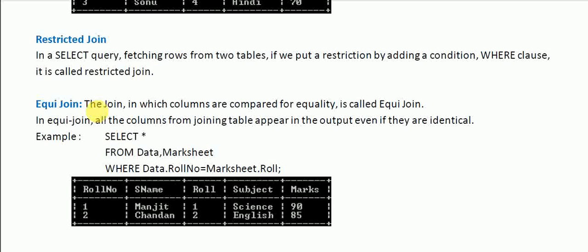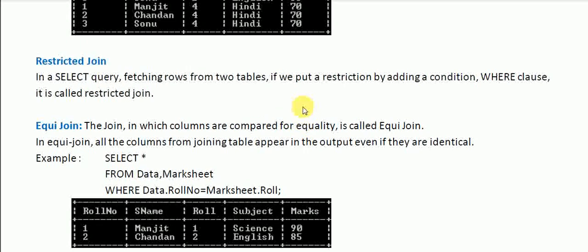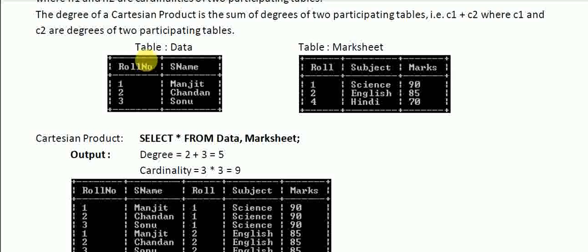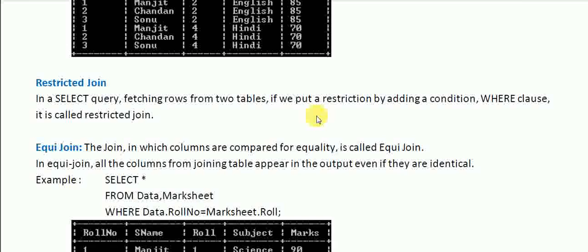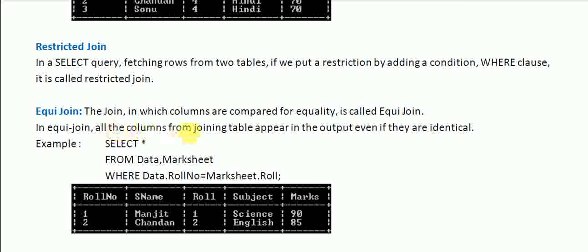The next type is the equi join. In an equi join, the columns are compared for equality. For example, we compare the 'roll' column from the data table with the 'roll number' column from the mark sheet table. Rows where these values are equal will appear in the output. In an equi join, all columns from both tables appear in the output, even if they are identical.